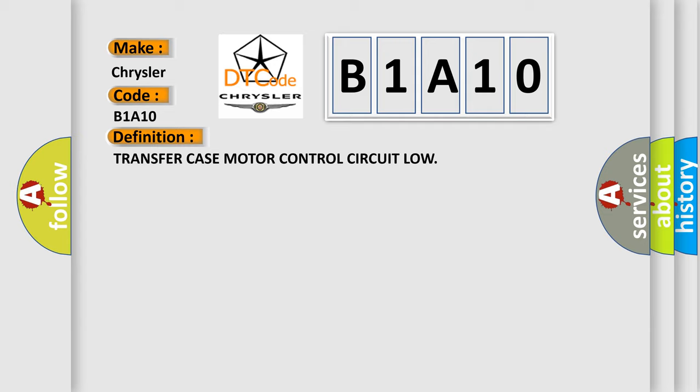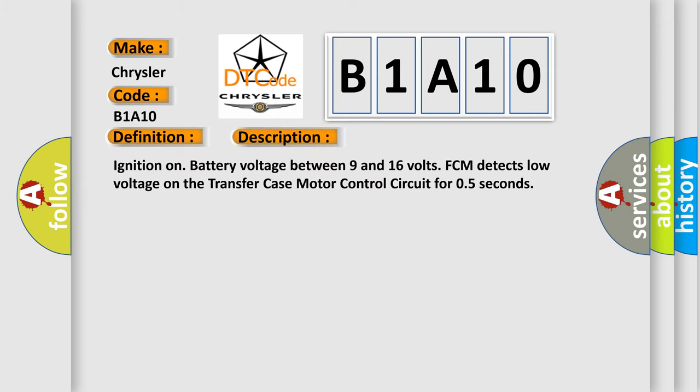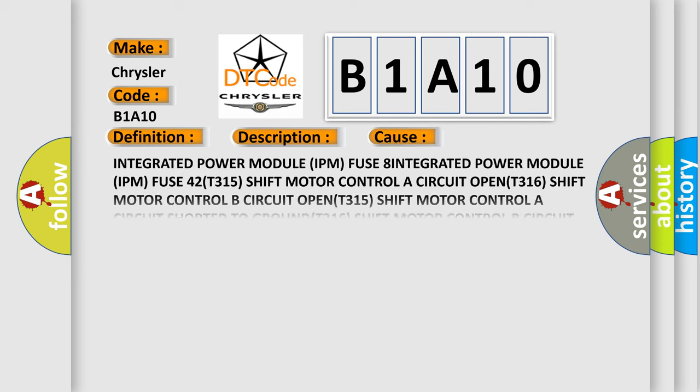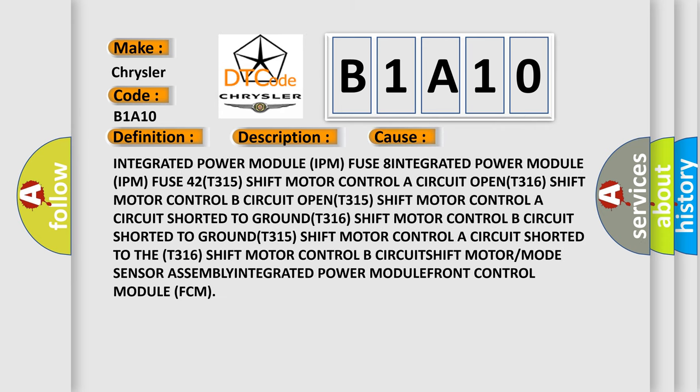The basic definition is: Transfer case motor control circuit low. With ignition on and battery voltage between 9 and 16 volts, the FCM detects low voltage on the transfer case motor control circuit for 0.5 seconds. This diagnostic error occurs most often in these cases: Integrated Power Module (IPM) fuse, fuse 42 or 315; shift motor control circuit A (circuit 315) open or shorted to ground; shift motor control circuit B (circuit 316) open or shorted to ground; faulty shift motor or mode sensor assembly; faulty Integrated Power Module; or faulty Front Control Module (FCM).